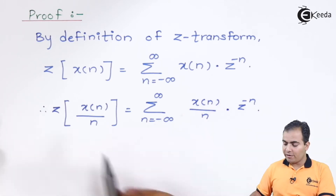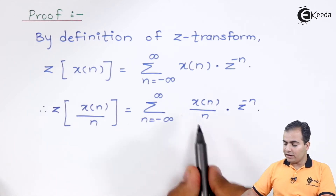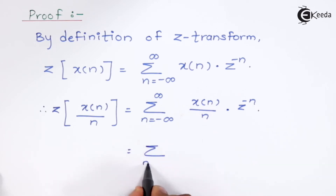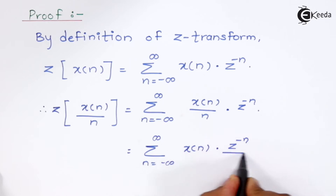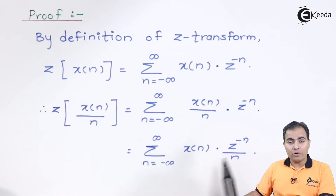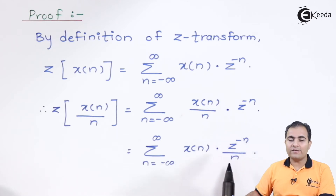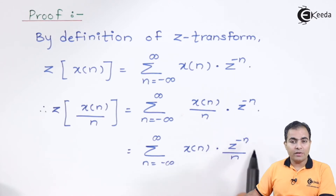We divide both sides by N. The next step is to move this N into the denominator of Z to the power minus N. This is because Z to the power minus N upon N can be obtained by using the integration of Z, which is what we want to prove — the integration property.